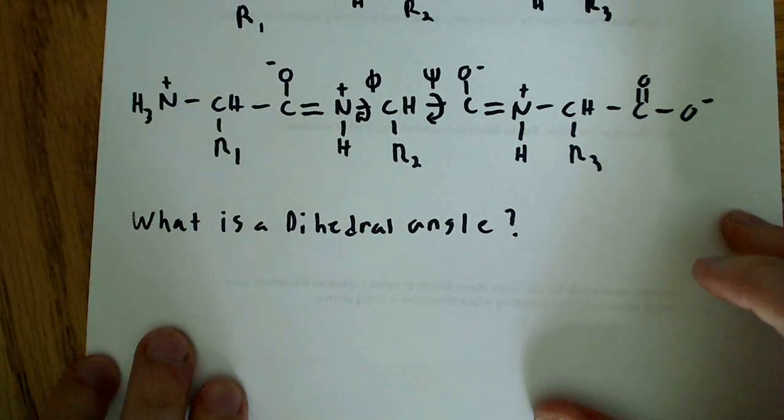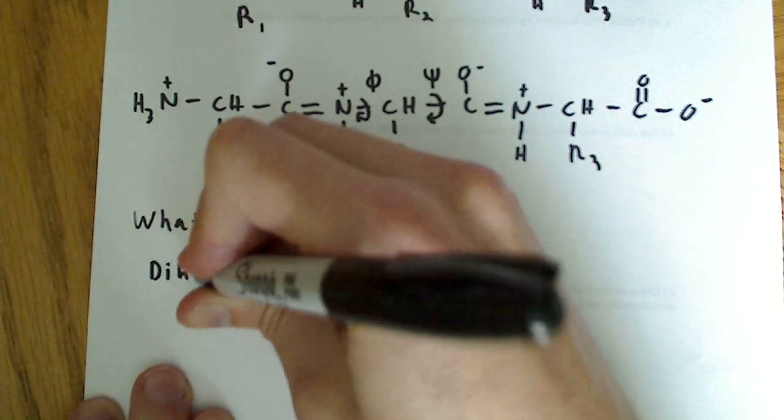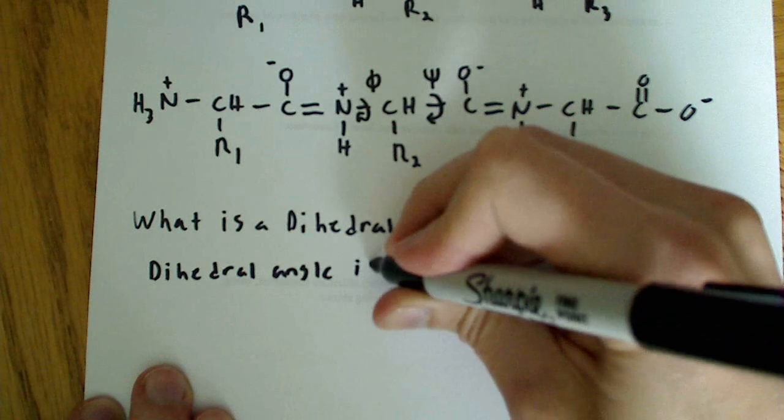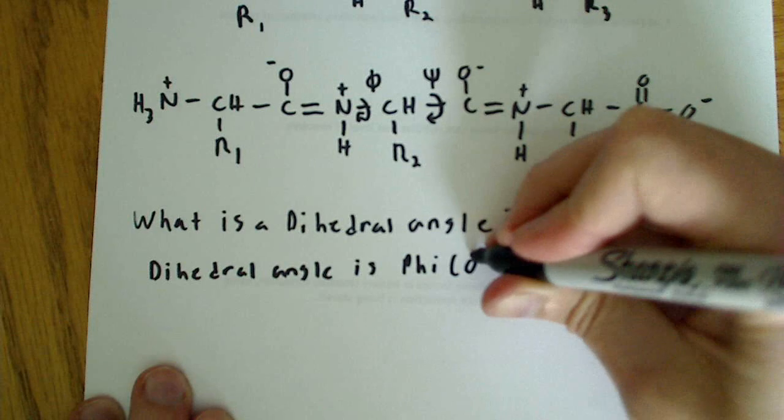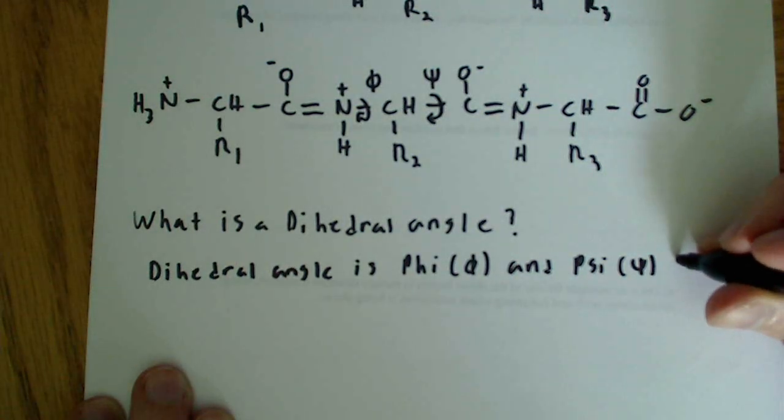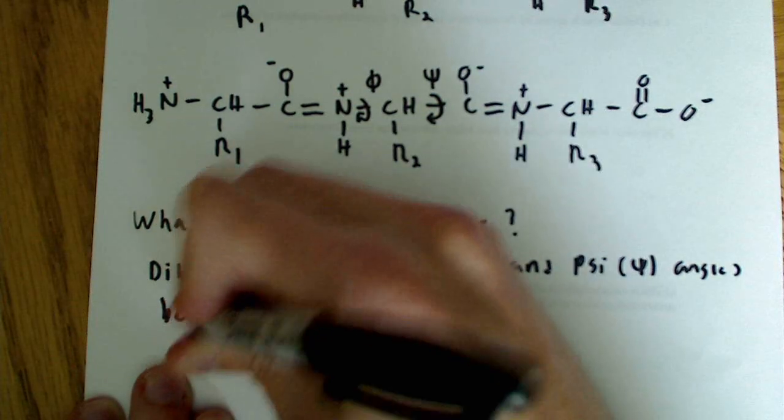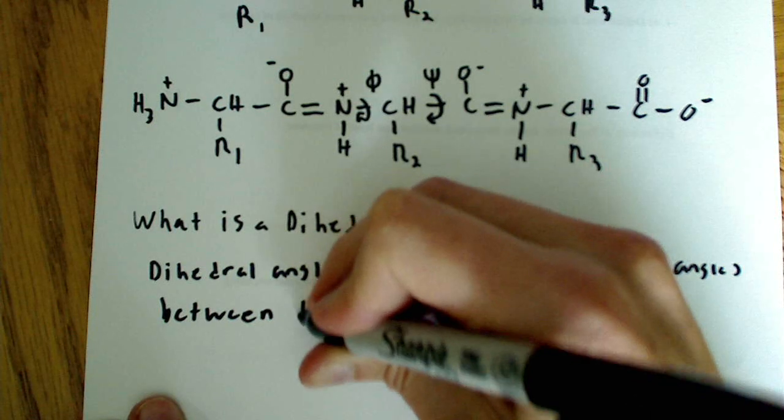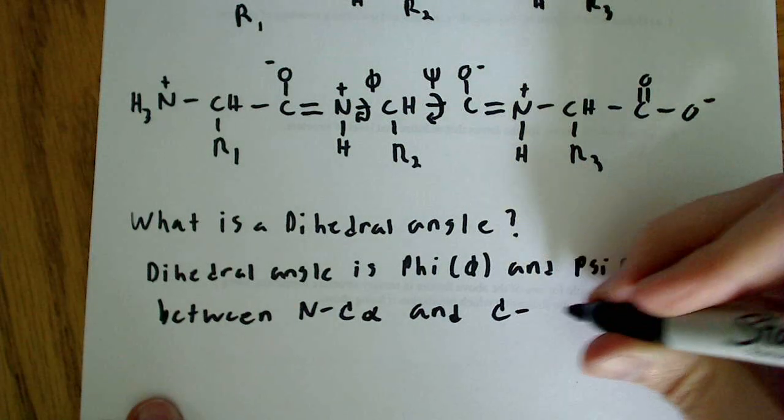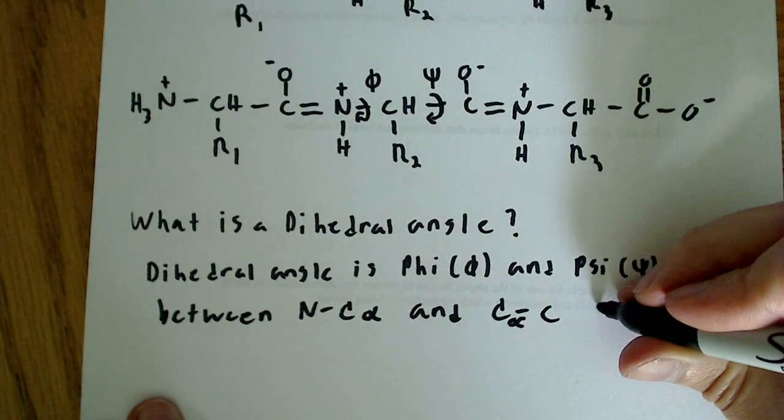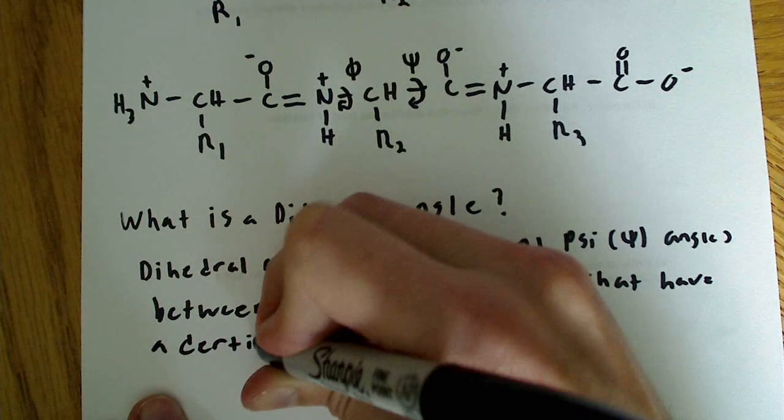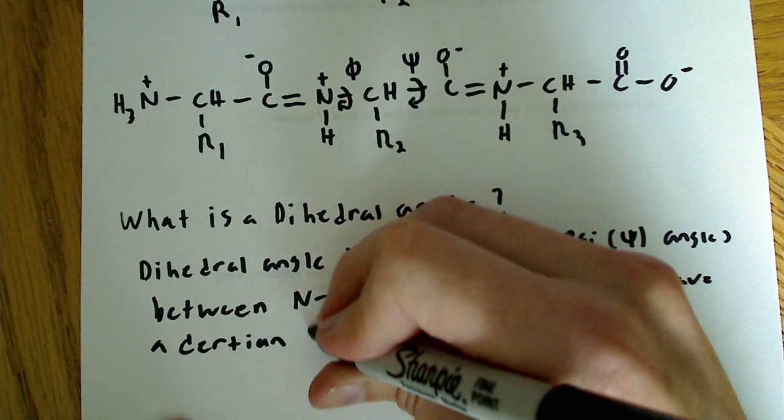So if I were defining maybe what a dihedral angle is, I would say that a dihedral angle is phi and psi angles between the N and C alpha, and the C alpha C that have a certain range of allowable values.